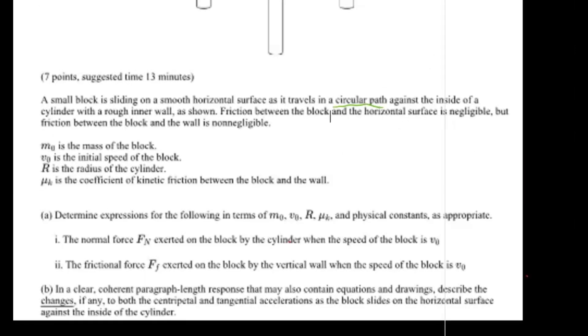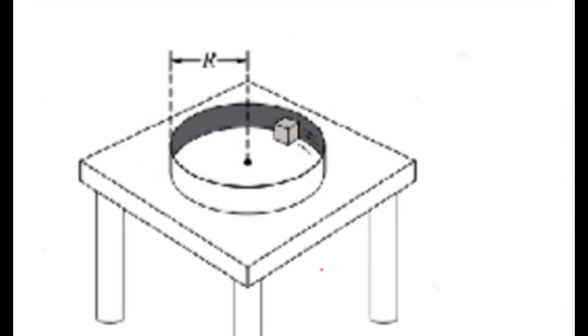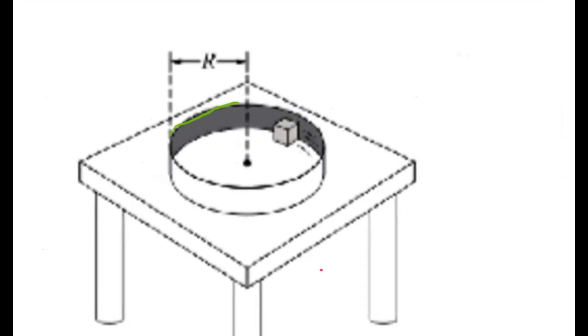So the first part of this problem wants us to determine the expressions for the following, the normal force and the force of friction in terms of all those variables. So the first thing I want to point out here is that it says the normal force exerted on the block by the cylinder. What it means here is this is the cylinder, so the vertical wall basically.